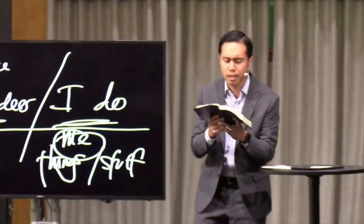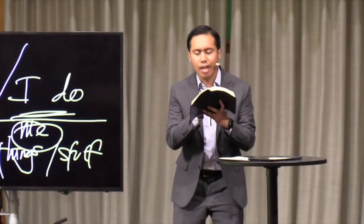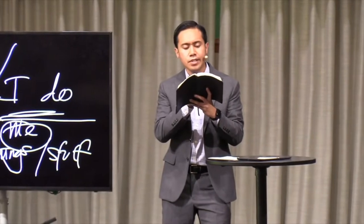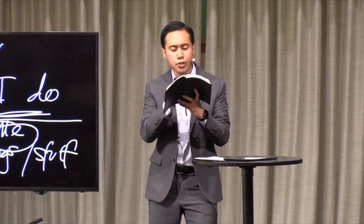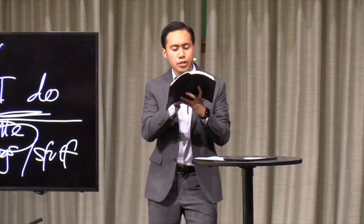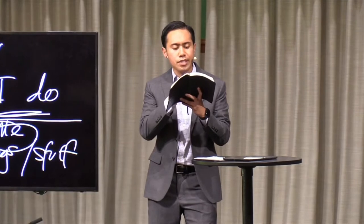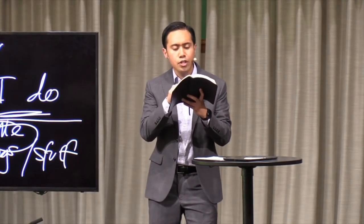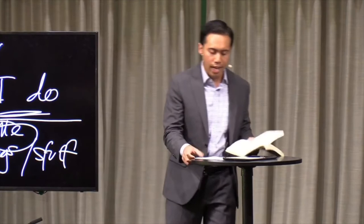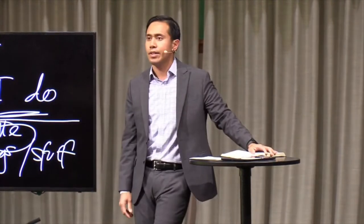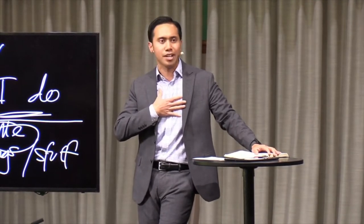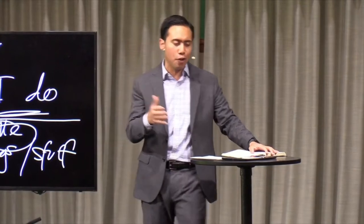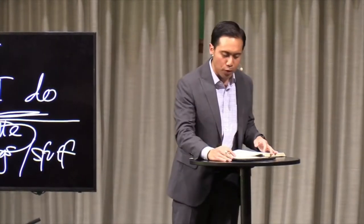Look what the text says. Now the works of the flesh are evident, which are adultery, fornication, uncleanness, lewdness, idolatry, sorcery, hatred, contentions, jealousies, outbursts of wrath, selfish ambitions, dissensions, heresies, envy, murder, drunkenness, revelries, and the like. So, he just lists 17 things that reveal that this is the acts of the flesh, of this fleshly nature. I'm not going to list all of them for you on the screen, but I'm going to show you a few categories that I came up with as I put this together.